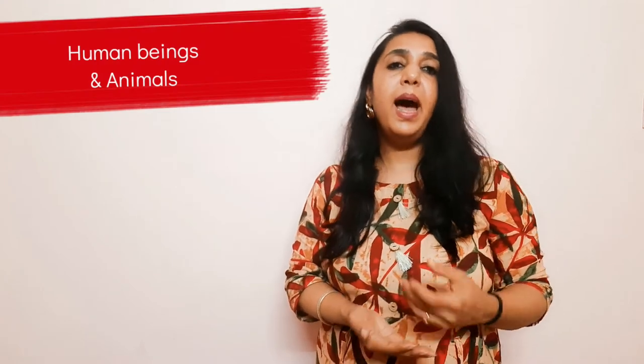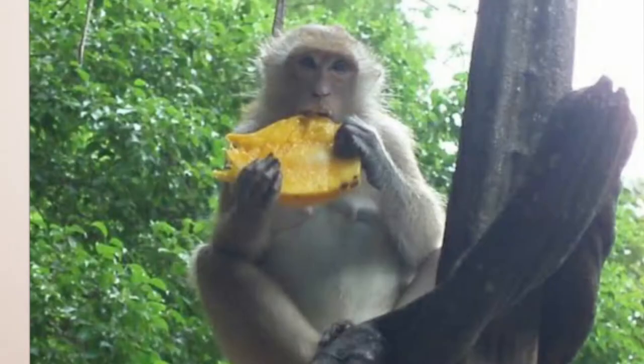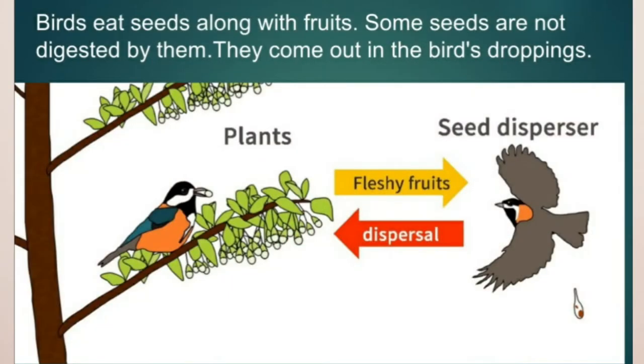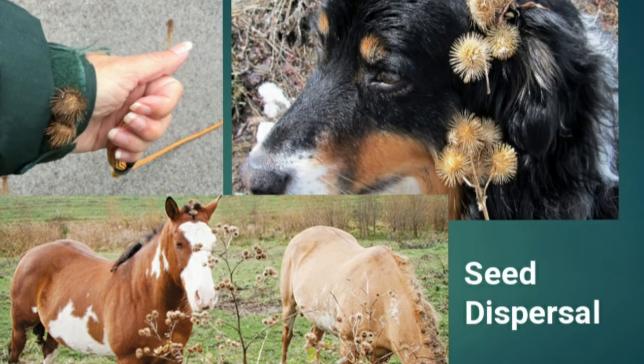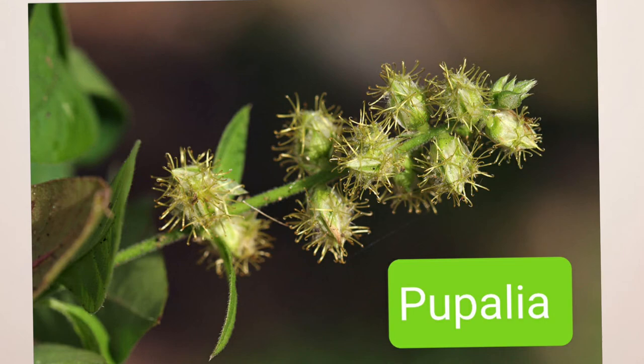The next agent is dispersal by human beings and animals. We eat the fruit and throw away the seeds, and sometimes those seeds find suitable germinating conditions and grow. Animals do this too. Birds and animals eat the plant at one place and then pass out the undigested seed at another place, where it germinates far from the parent plant. There are also certain seeds which have hooks, spines, or thorns — they get attached to the fur of passing animals, feathers of birds, or even our own clothes, and eventually get dispersed to distant places. Examples are Pupalia and Xanthium.